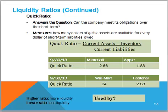Another liquidity ratio is the quick ratio. It answers the same question, but it looks at what they call quick assets. In the quick ratio, we subtract inventory because it is not as quick to turn inventory into cash as it is to turn accounts receivable — typically 30 days — cash, and investments into cash to pay liabilities. Sometimes this shows a different story. Again, Microsoft is more liquid according to this measure than Apple.